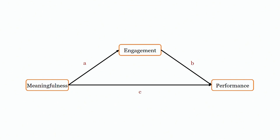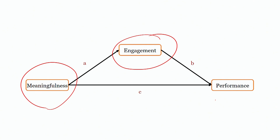Let's run a model. The model we'll be testing today is the indirect effect of meaningfulness on job performance via engagement. The mediator here is job engagement, our independent variable is meaningfulness, and our dependent variable is performance. The mechanism through which meaningfulness influences performance could be engagement — and that's our mediator.